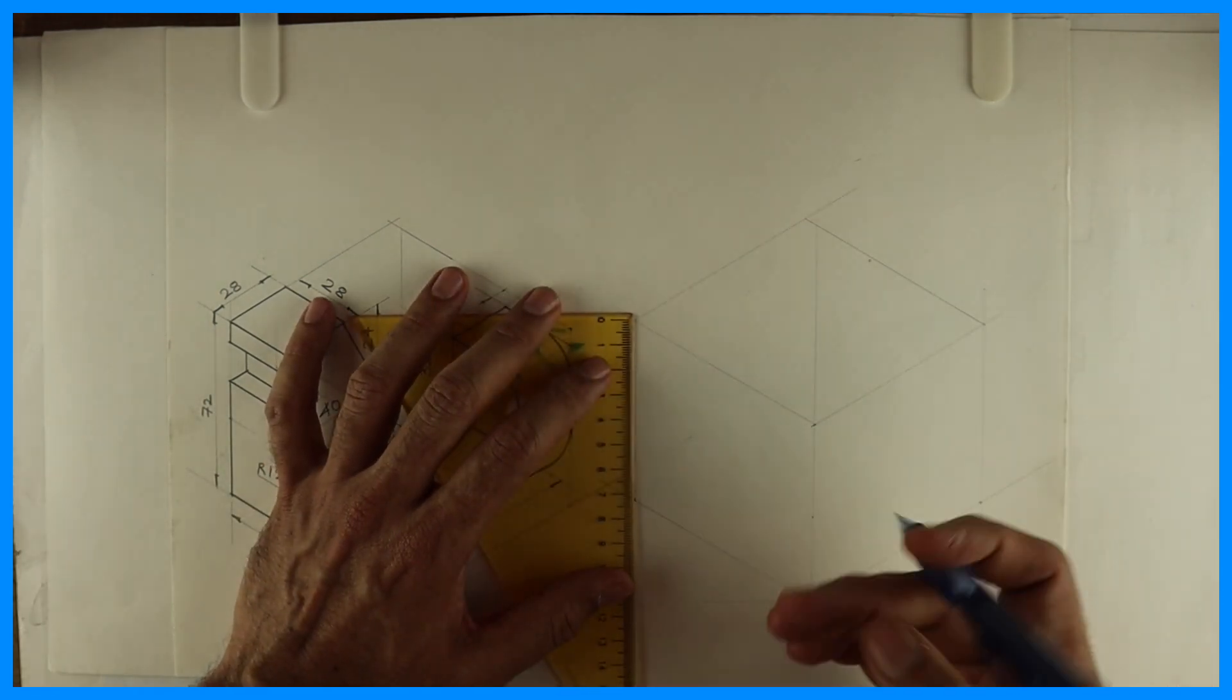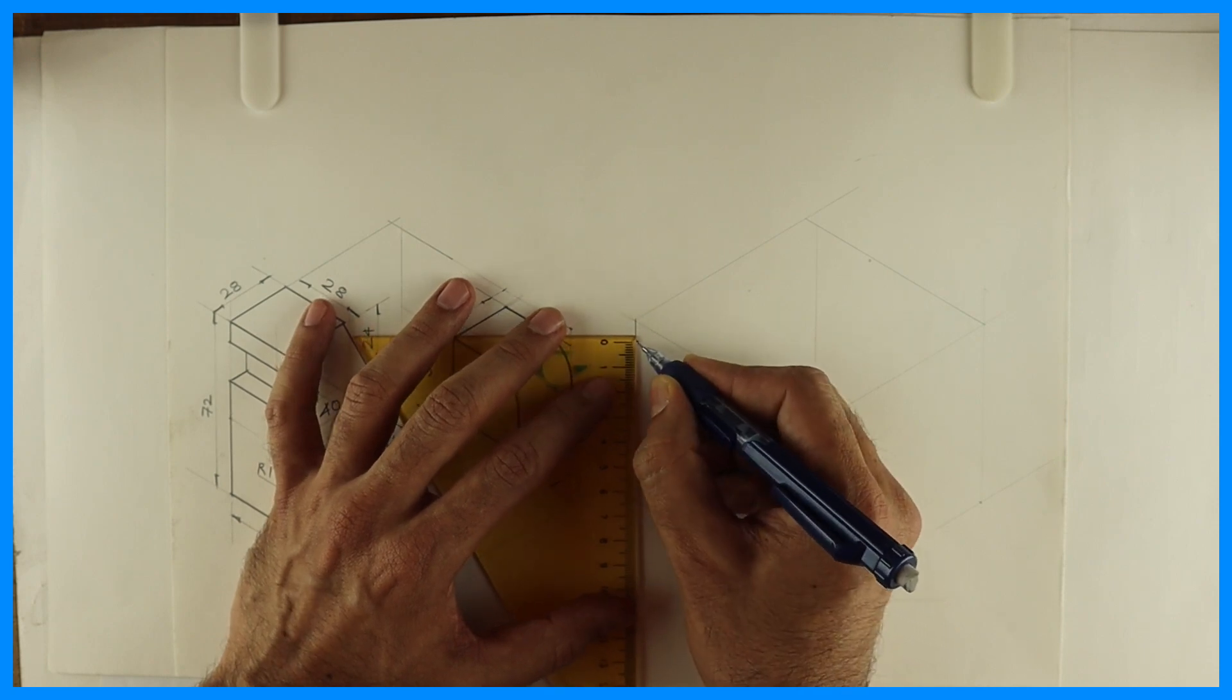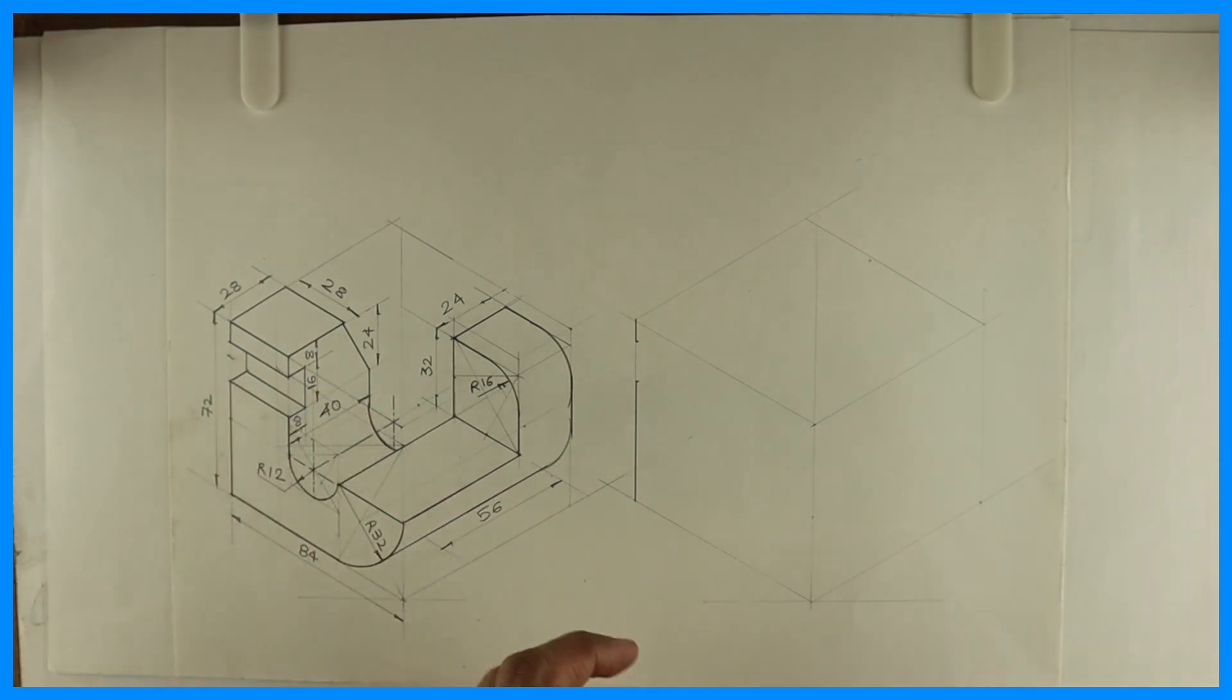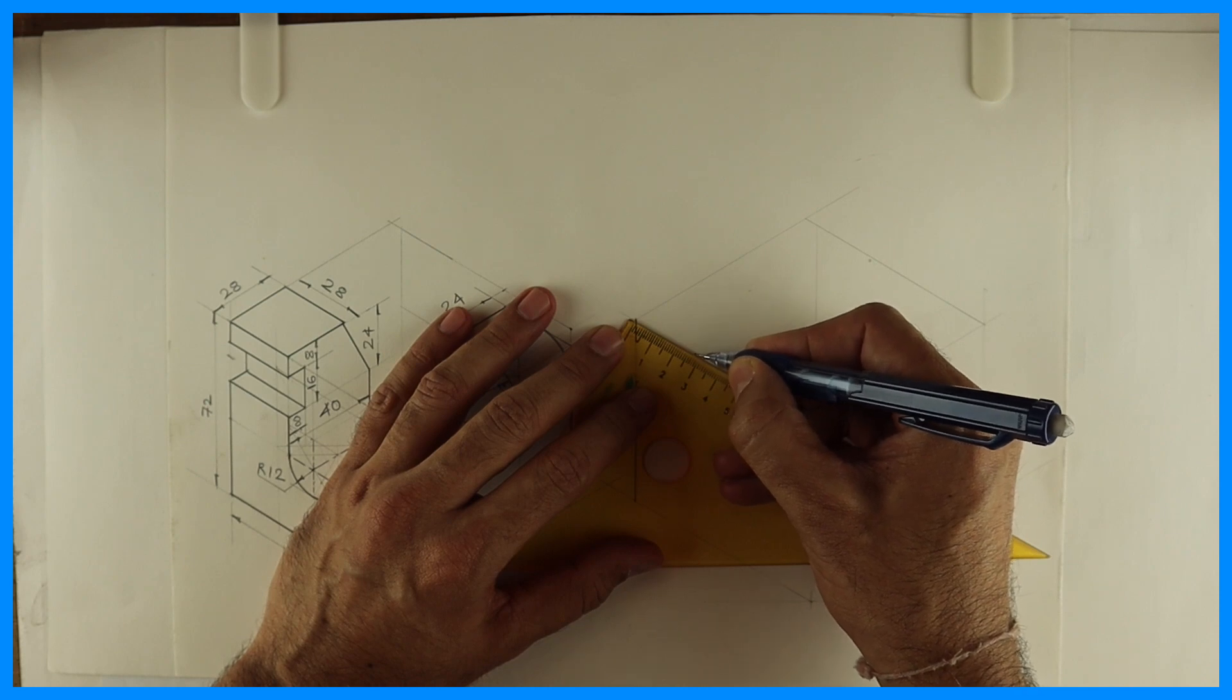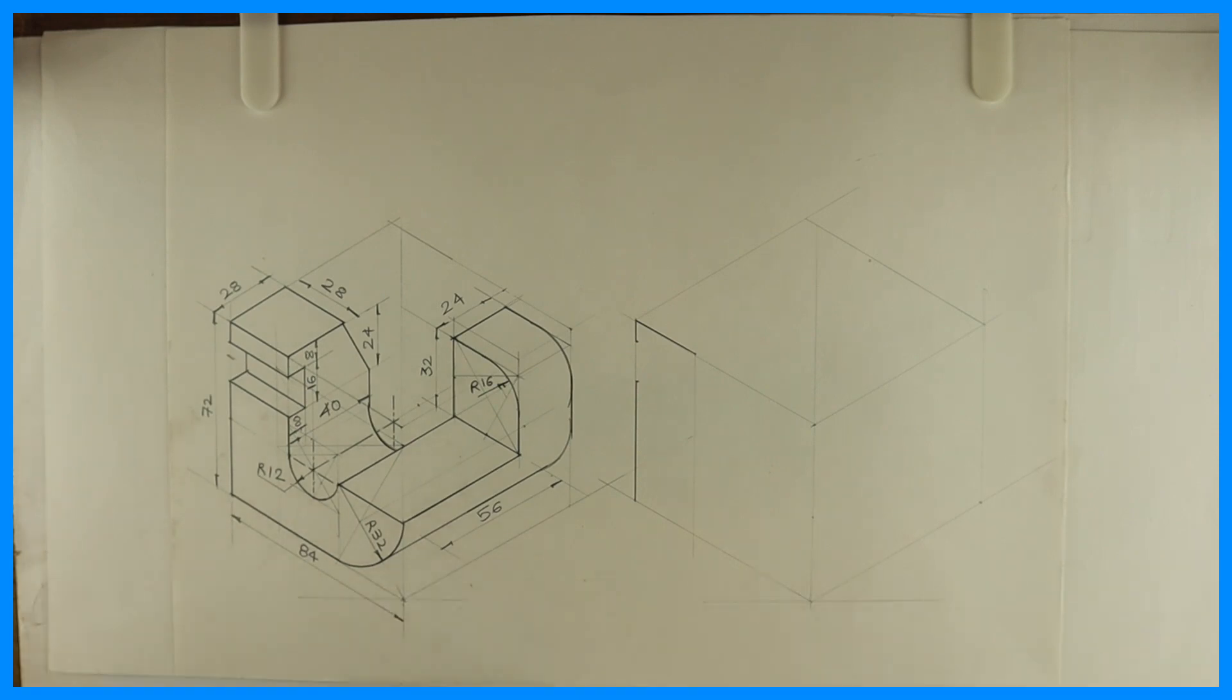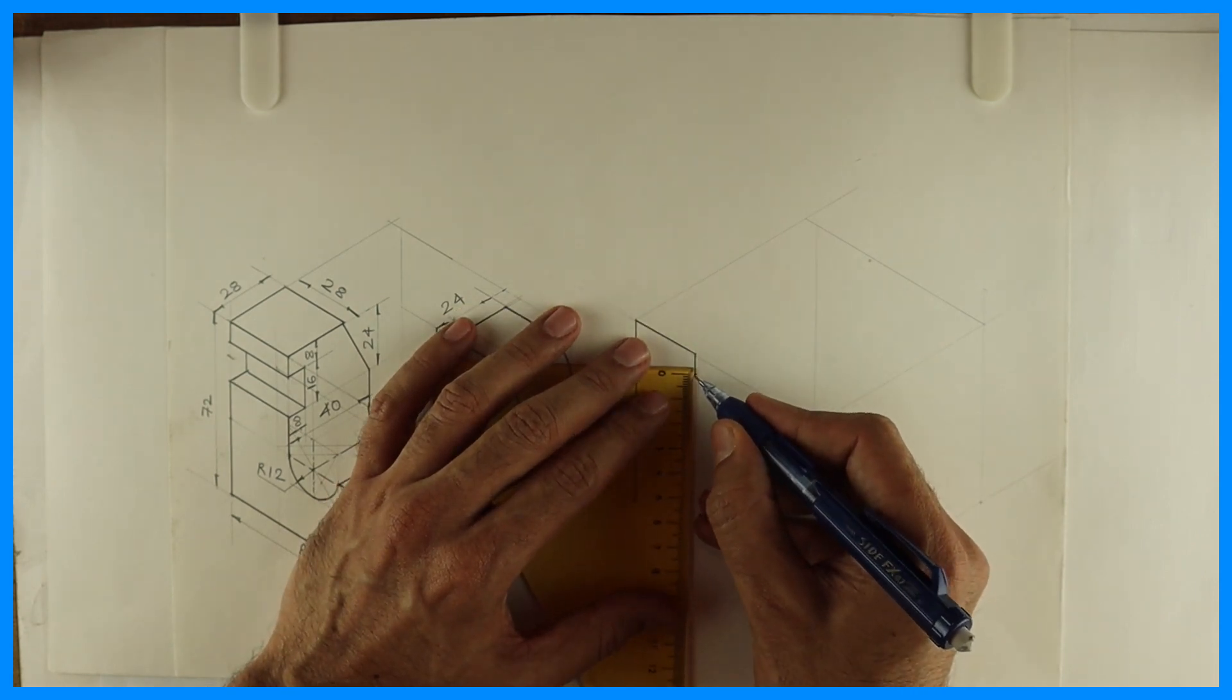This is 8-16, so I'll mark 8-16. Then this is 28. You go down. How much are you to go down? 8. Then again you go down by 16.